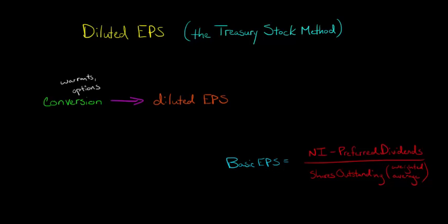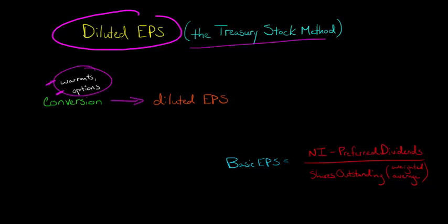In this video, we're going to talk about how to calculate diluted earnings per share by using the Treasury Stock Method. When investors hold stock warrants or stock options in our firm, they can potentially convert those options or warrants into stock, into common shares of our firm. And that can, in turn, dilute or reduce our earnings per share.